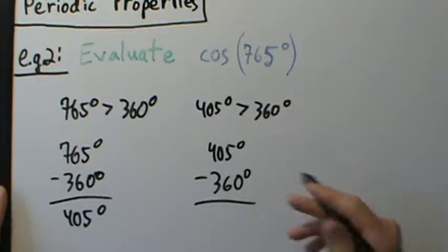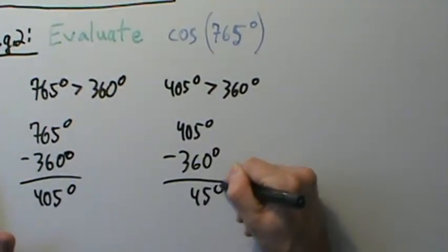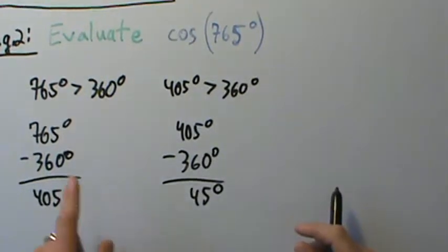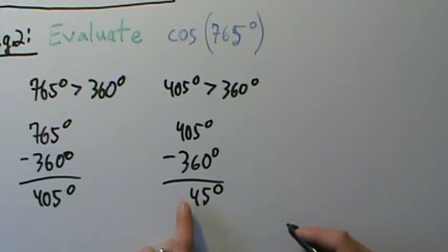Now when we do this, what are we going to get? We're going to get 45 degrees. It's going to be 45 degrees. So now we had to subtract 360 degrees twice, but we ended up with an angle here that's 45 degrees. So it's between 0 degrees and 360 degrees.